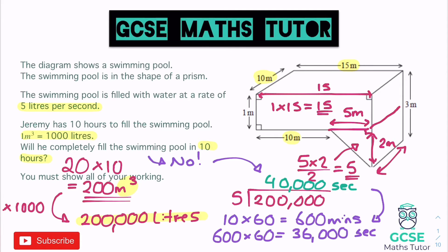That's only one way of approaching it. As I said at the start, you could have split the shape into a trapezium and a cuboid instead. Also in this question, you could have turned the 40,000 seconds into hours, which would have been easier with a calculator but not so easy without one. But there we go — there's our first question. Now we're going to look at another question on volume, which is just a little bit different.